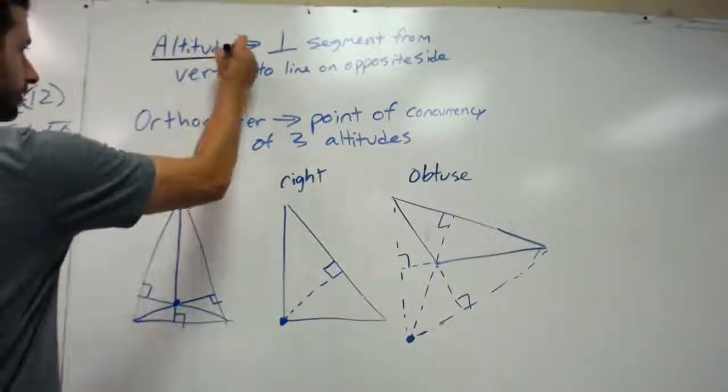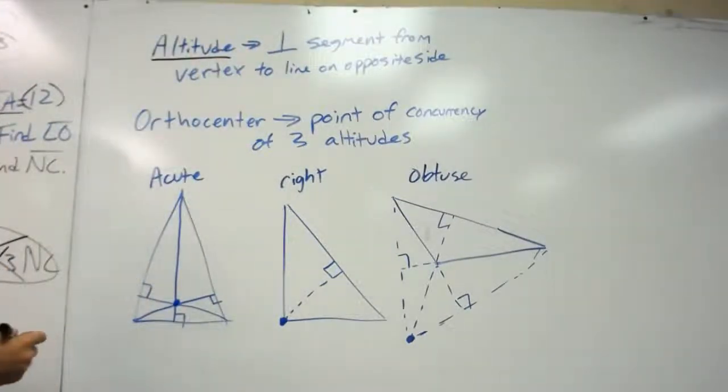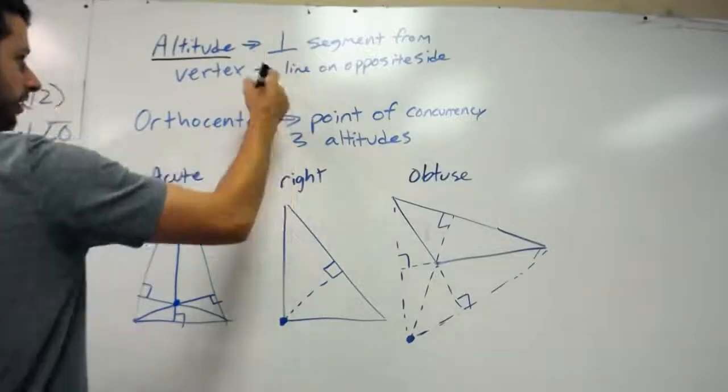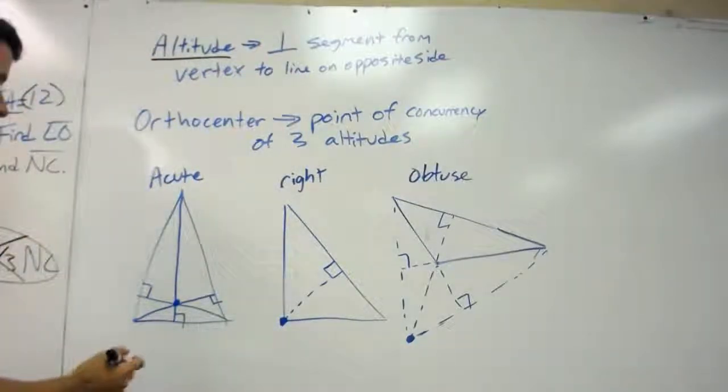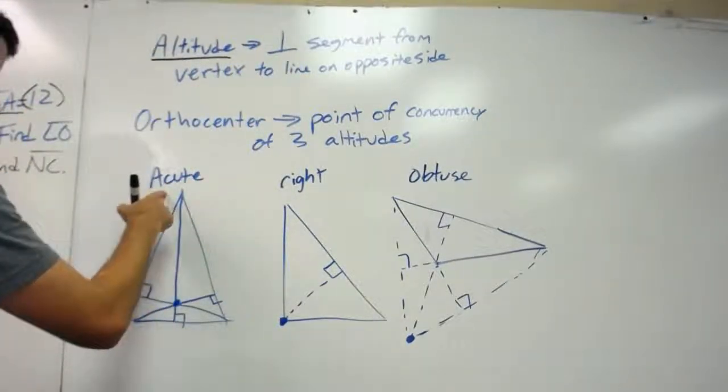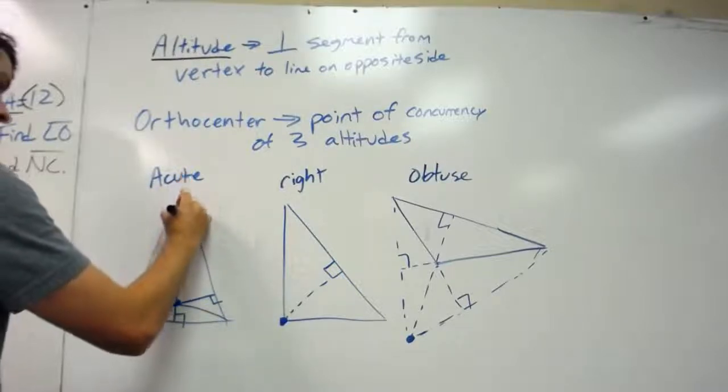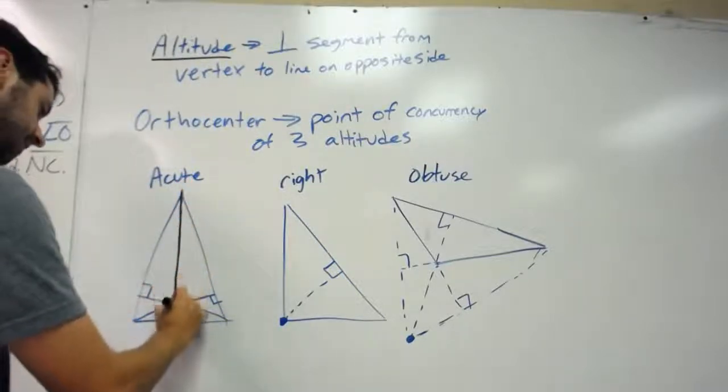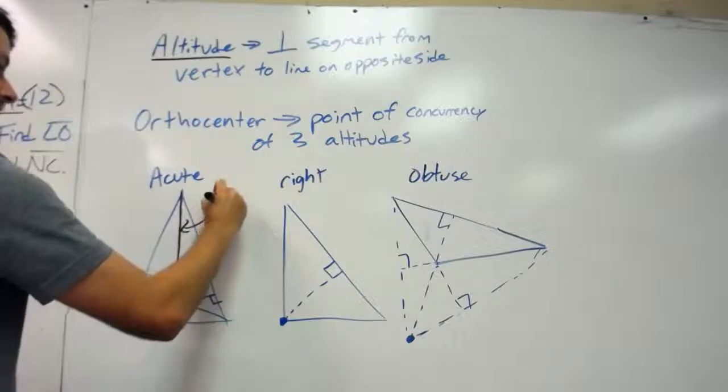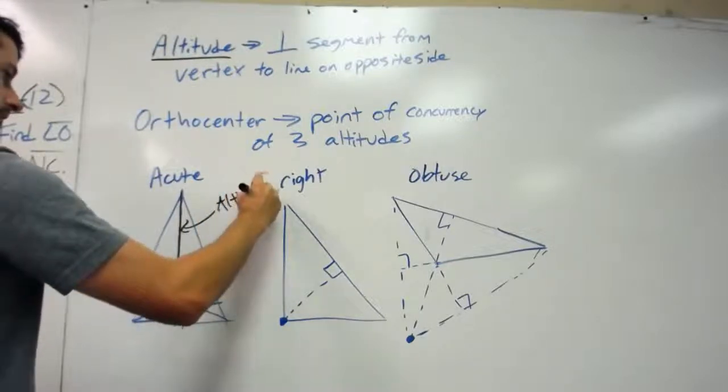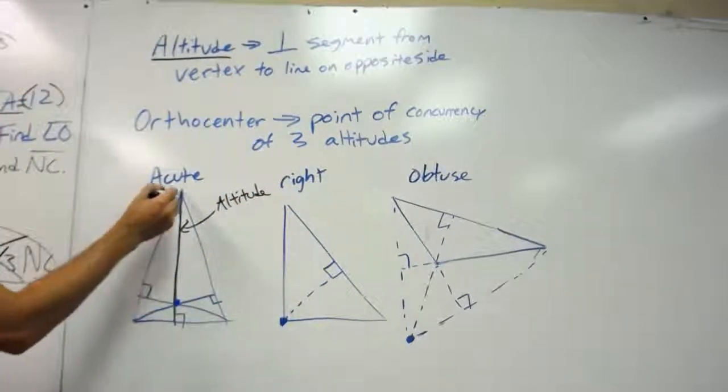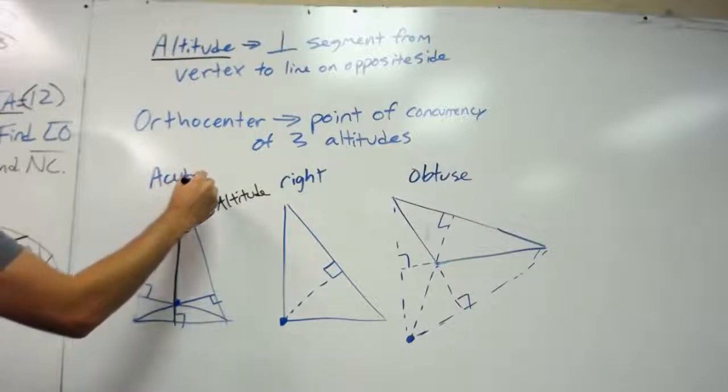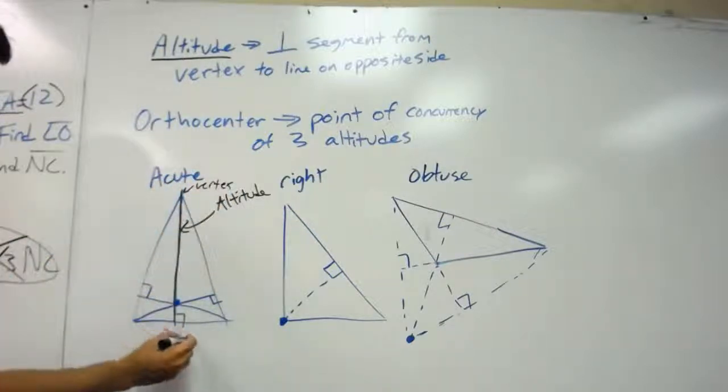an altitude is another definition. An altitude is a perpendicular segment from a vertex to the line on the opposite side. So let's look at this triangle. This line is an example of an altitude because it goes from a vertex to the opposite side, but it is perpendicular.